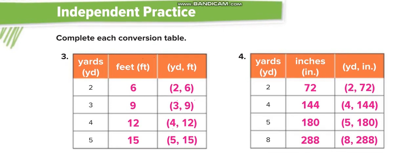Independent practice: yards to feet — 1 yard = 3 feet, 2 yards = 6, 3 yards = 9, 4 yards = 12, 5 yards = 15. Yards to inches — 1 yard = 36 inches, 2 yards = 72, 4 yards = 144, 5 yards = 180, 8 yards = 288. Write yards in the first column and inches in the second.